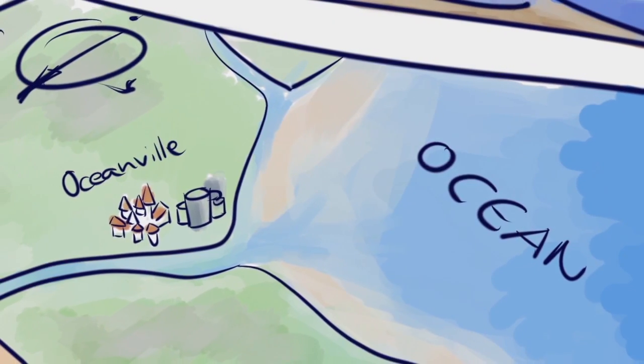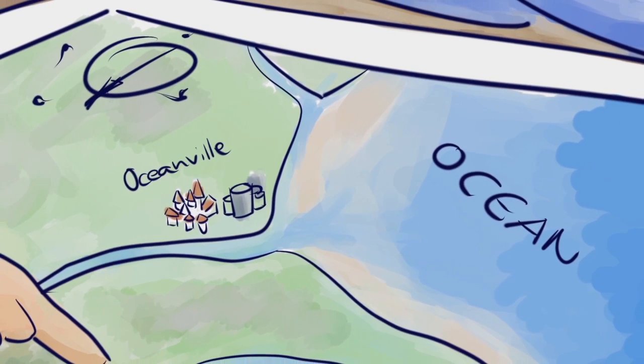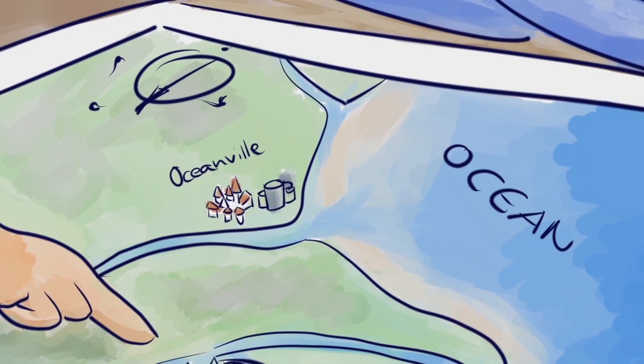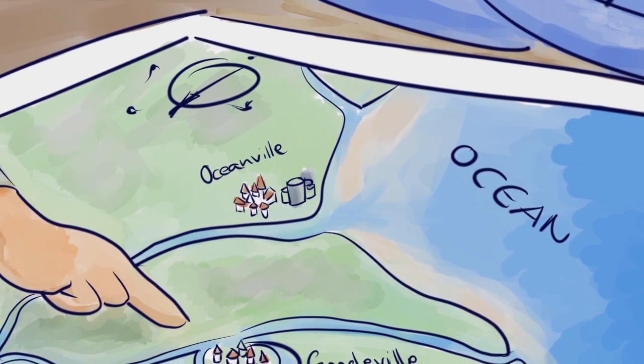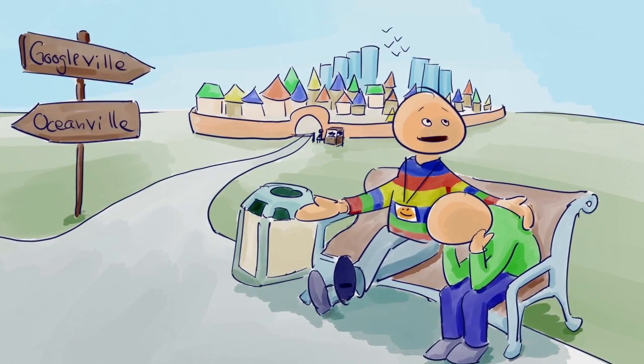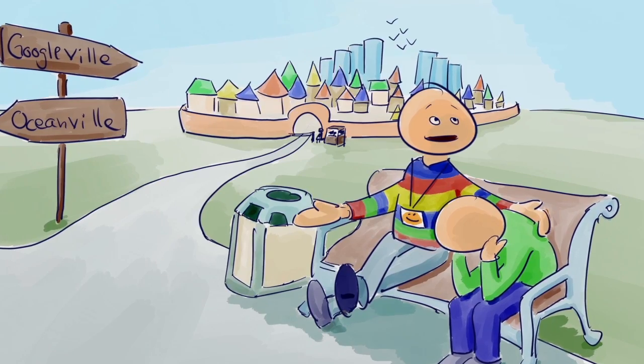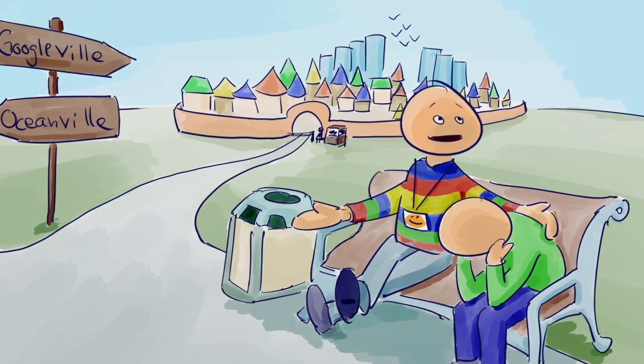The water problem in Oceanville was a serious threat, and the leaders in the village had to find a solution. They turned to the Apache community, who had heard of a system devised by people in a nearby village, Googleville. The people of Googleville didn't allow anyone inside, but they shared with the public the underlying methods of their water purification process.